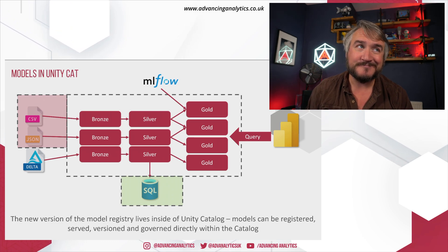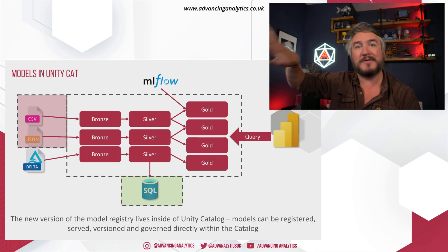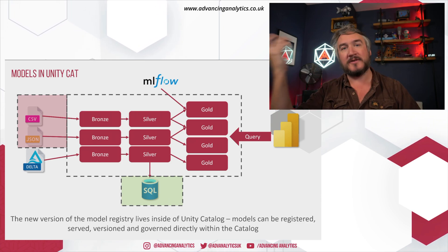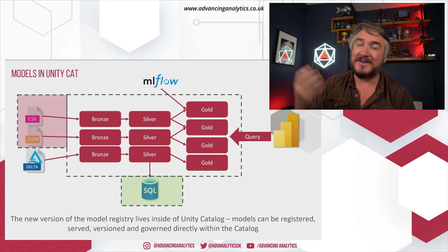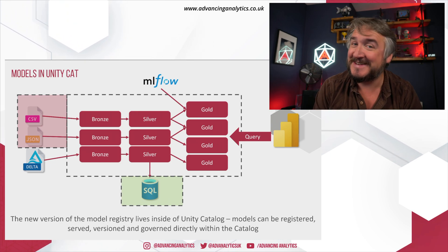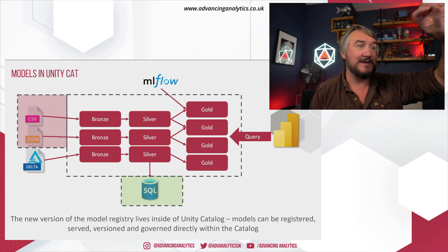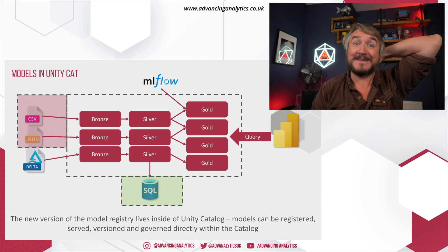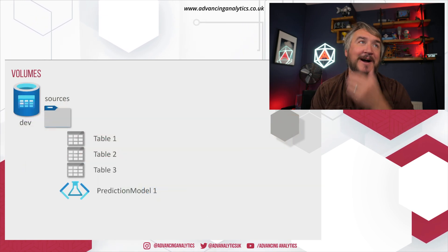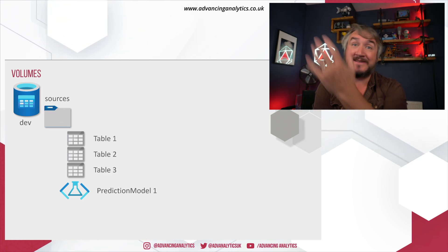Moving on to models: where we previously had MLflow as a completely separate thing with its own model registry living in a specific view inside Databricks, we've now got all those models registered in Unity Catalog. You register models, functions, and feature tables with Unity Catalog, and they all appear in the same unified catalog. MLflow is coming into that picture, allowing you to register and secure models the same way — look at descriptions, lineage, and all governance aspects of that model in the same place. I just see that model as if it was a table in my list of objects.